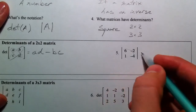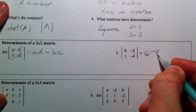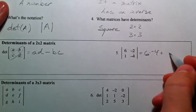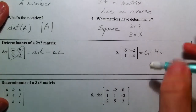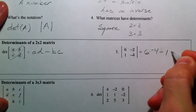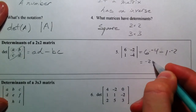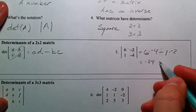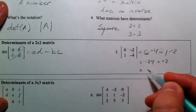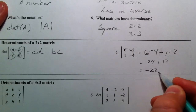So 6 times negative 4, and subtract from that 1 times negative 2. So we have negative 24 minus a negative 2, so that's really plus. So we have negative 22.